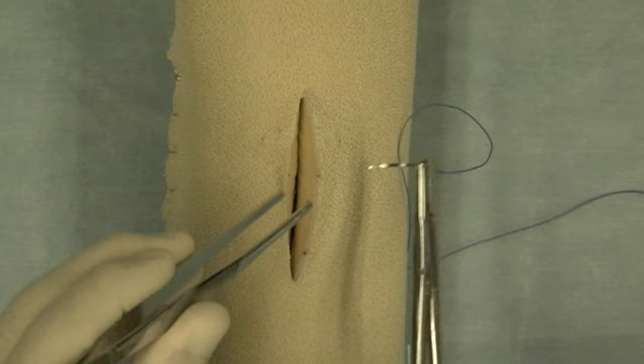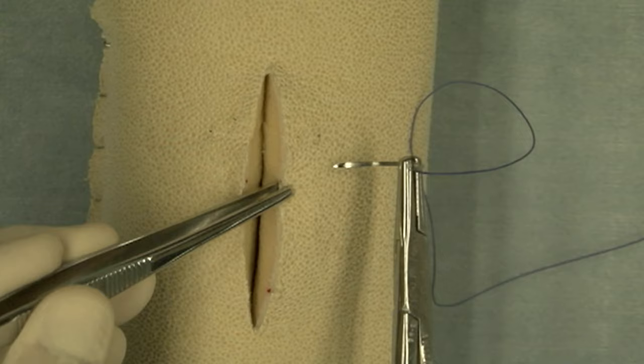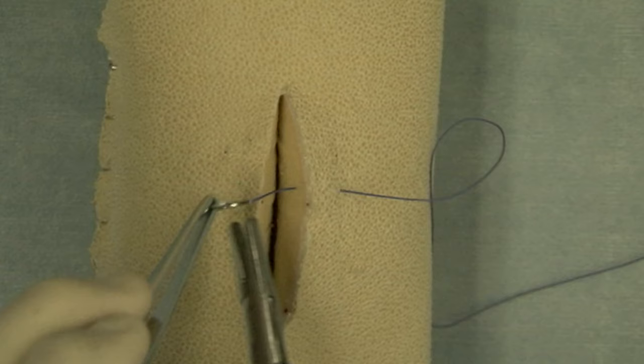...is far away from the skin edge. Notice that I am using the skin portion of the daisy—that's far from the skin edge. The second bite is near the skin edge, hence the name far near.